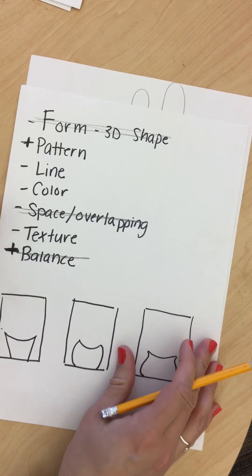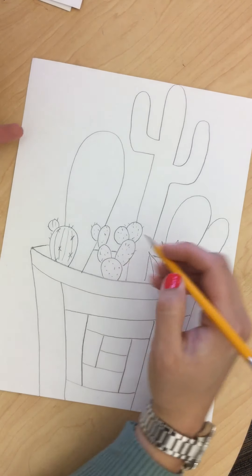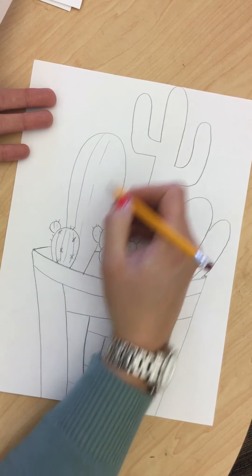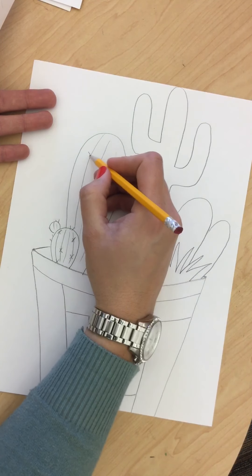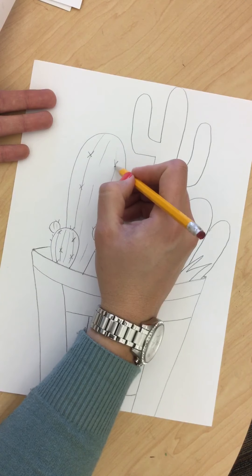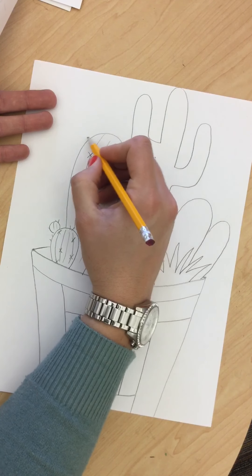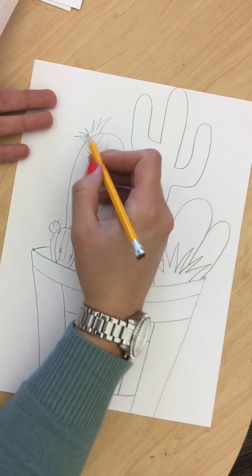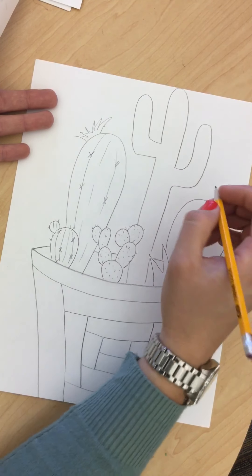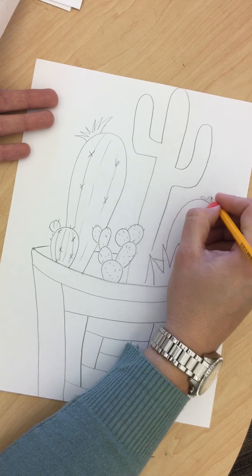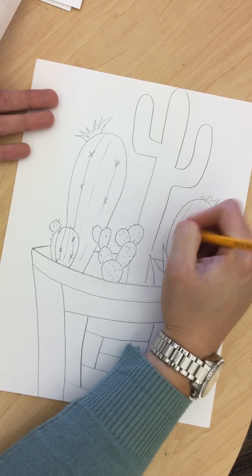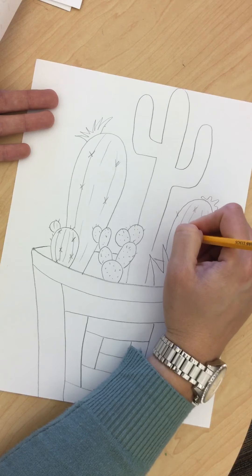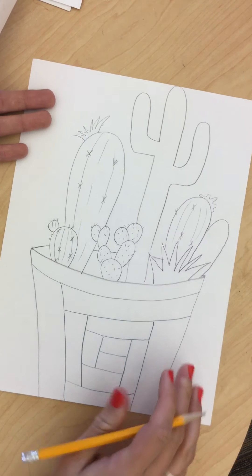We started to add texture into our cactuses. And you can continue with that by giving them lines, making prickly marks on them. I could put a flower on top if I wanted to. It's not going to look like a flower until I color it. But by adding texture, visual texture, making it look like it's pokey, that will help.